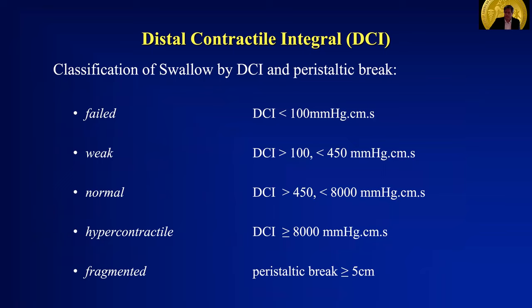In looking at individual swallows using the DCI: a failed swallow is one where the distal contractile integral is less than 100 mmHg·cm·s⁻¹, whereas a weak swallow is greater than 100 but less than 450. A normal swallow is in the window between 450 and 8,000 — any of those would be considered normal as long as they're not premature or something like that. Greater than 8,000 mmHg·cm·s⁻¹ is known as hypercontractile. A fragmented swallow would be one in which the peristaltic break — the distance in centimeters between the proximal and distal segment — is greater than or equal to five centimeters.